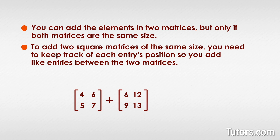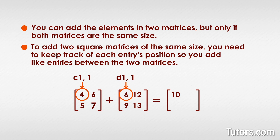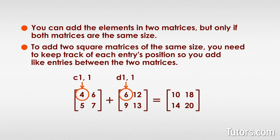Here are two small matrices. Take each entry and its position: c_11 is a 4 while d_11 is a 6, so you are adding 4 plus 6, and the solution matrix will show 10 in position 1,1. The full addition gives: [4 6 5 7] plus [6 1 2 9 1 3] equals [10 18 14 20].